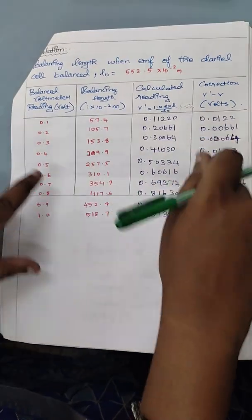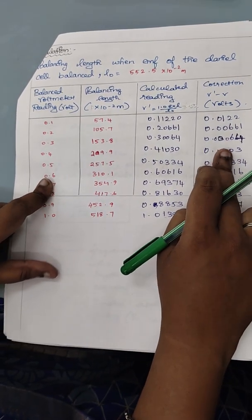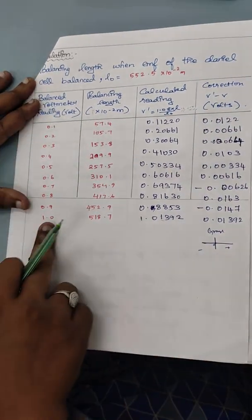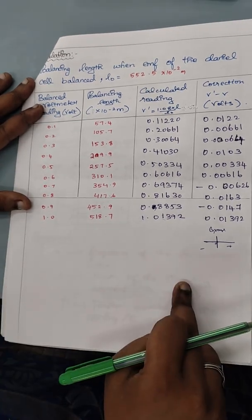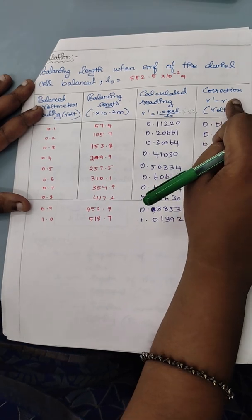For this and this only you will be drawing a graph. V dash minus V is an unknown value. So this is going to be y axis. Known value we always draw along x axis. So 0.1, 0.2, 0.3 will be plotted along x axis. And y axis we need to plot for V dash minus V.